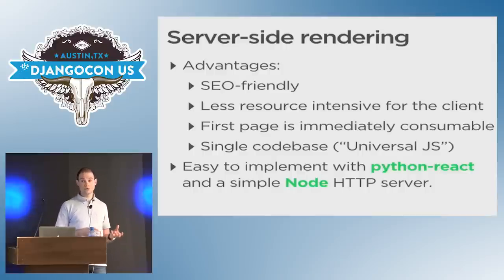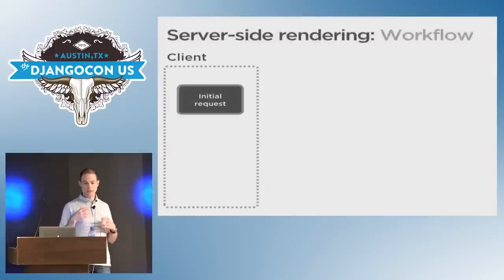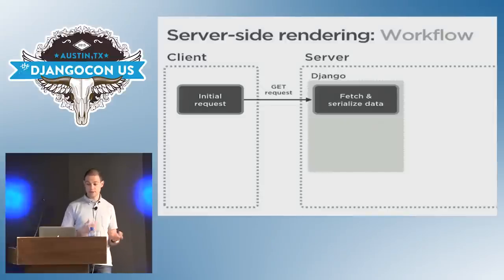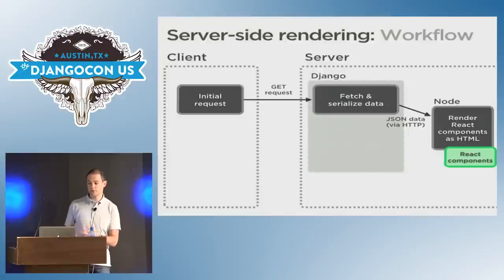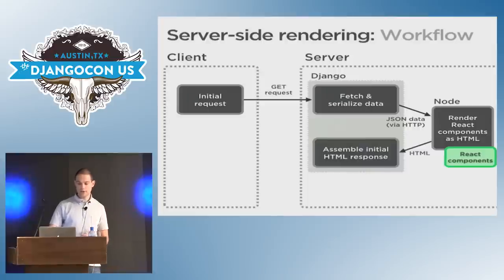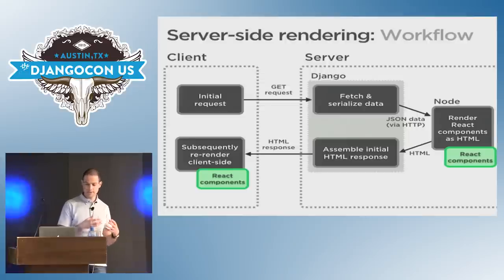You will also need to use a very simple Node HTTP server. So let's see how all those pieces fit together. When the user types in the URL to access your website, a GET request is sent to the server. Django will then fetch the data, serialize it as JSON, and send that over via HTTP to that separate Node server. That Node server just renders HTML — it uses the data you provided and the React components to render whatever component you want, then returns some HTML. Django puts all that together and sends it over to the client. Past that point, any subsequent refresh will be done by React client-side, using exactly the same React components.